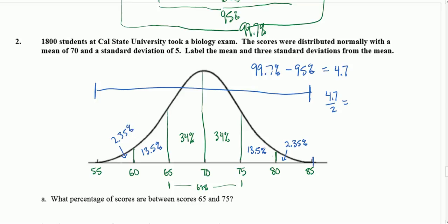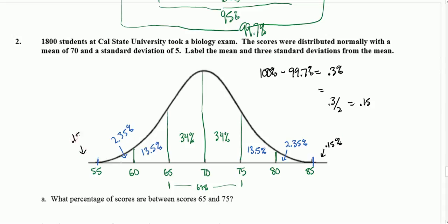Don't forget there is more outside because there's 100% under the whole curve. We've only accounted for 99.7%, which is almost everything. So if we consider the whole 100%, we've accounted for 99.7%, there's 0.3% left over, which is, if you cut that in half, 0.3 divided by 2 is 0.15. So we've got 0.15% on the edges.